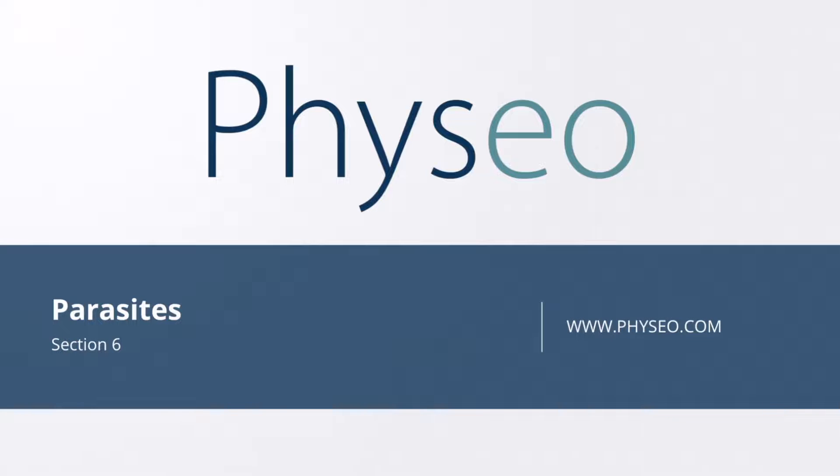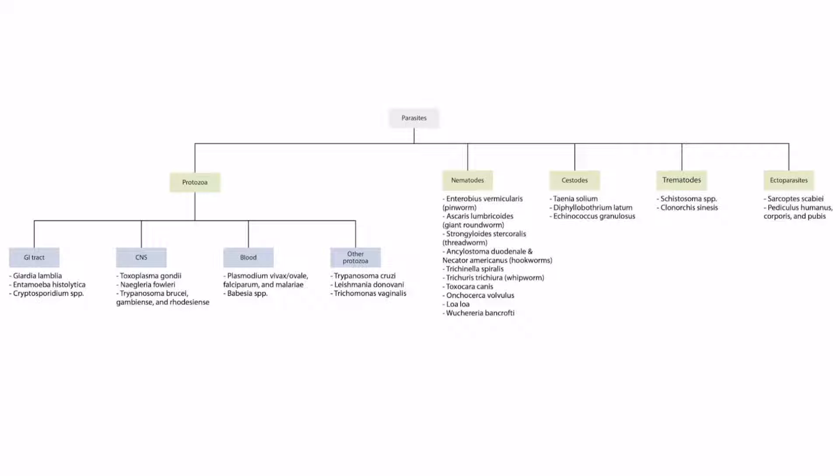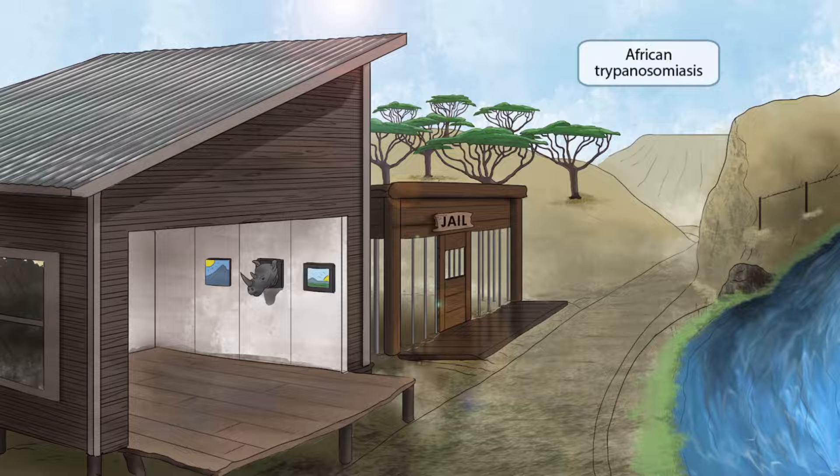Welcome to section 6 of the parasites. This is our overview figure showing the parasites you need to know for Step 1. In this lecture, we will be talking about the next CNS protozoa: Trypanosoma brucei, gambians, and rhodesians. Each of these three cause African trypanosomiasis, or African sleeping sickness.